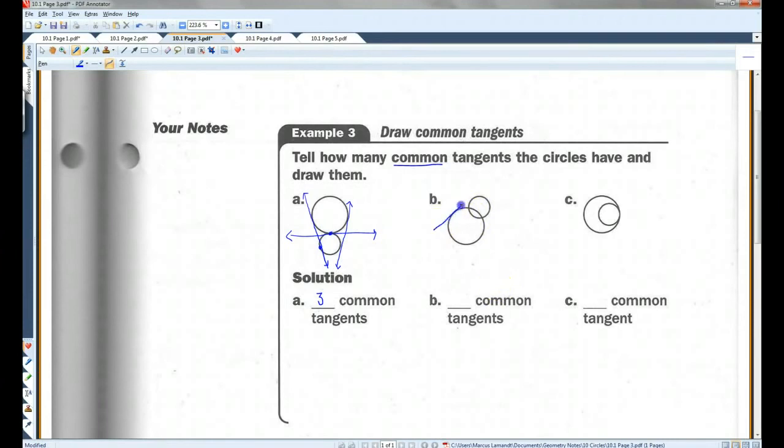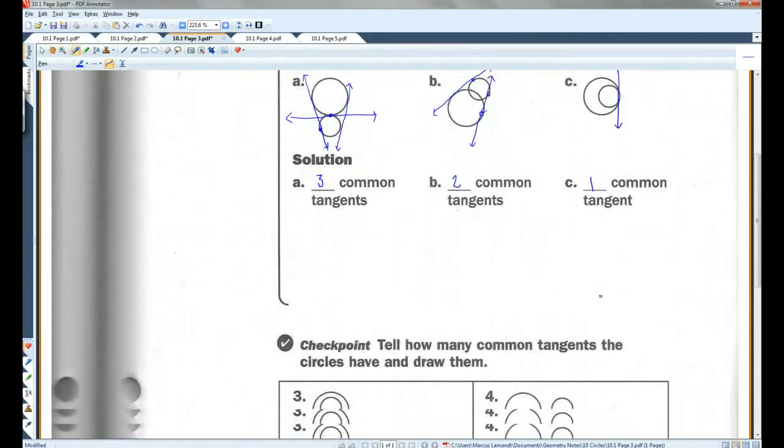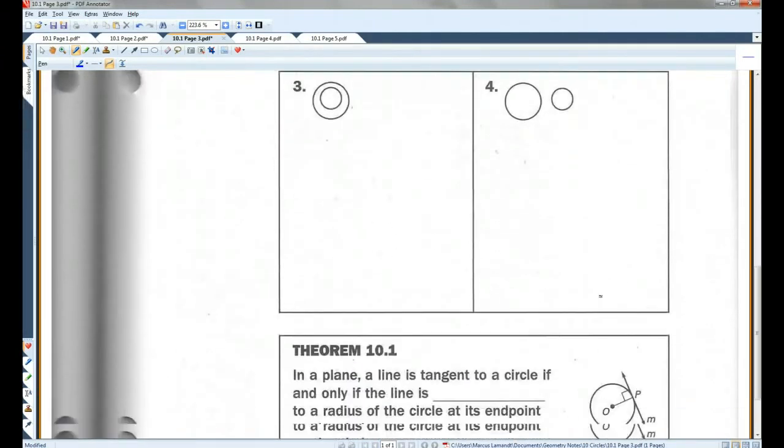This one, you can draw it like this. Or, same on the other side. Imagine those only hit once. So this has two common tangents. And this one, you can only draw it like this. There is really no other way to draw. So this has one common tangent. You guys can do the checkpoint. Let's go on to theorem 10.1.